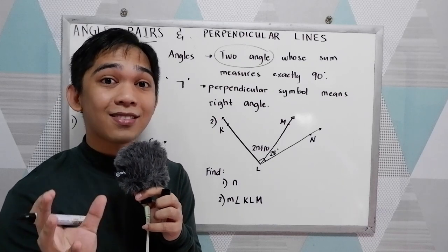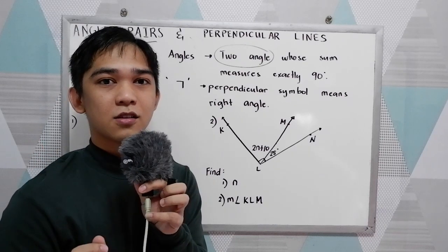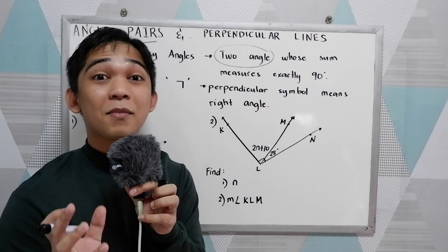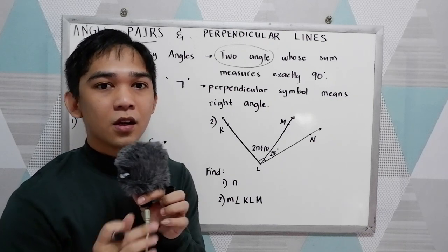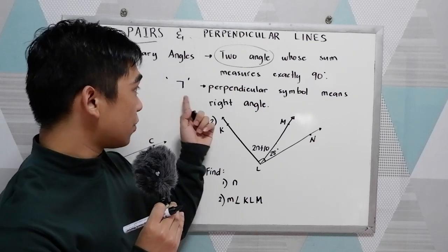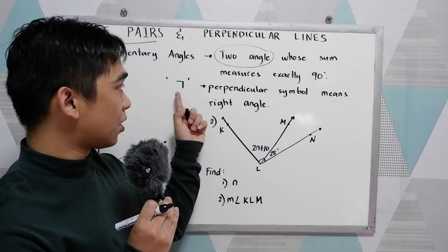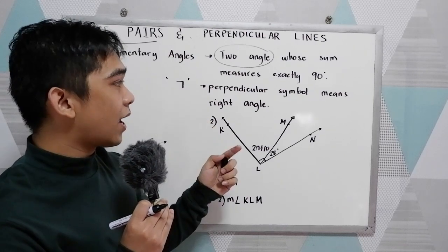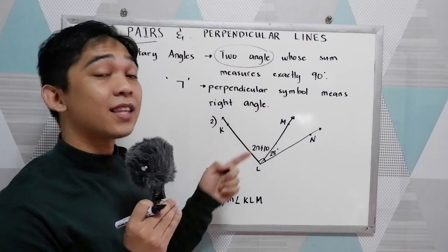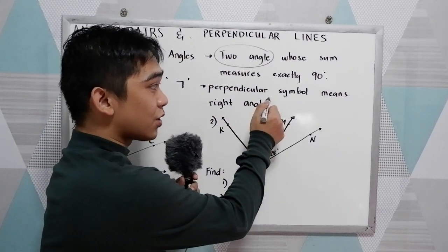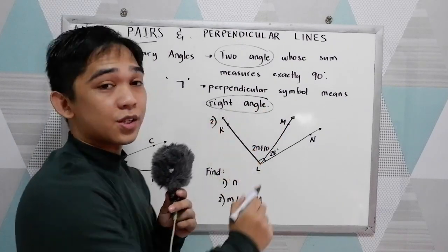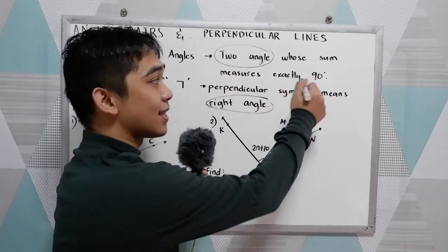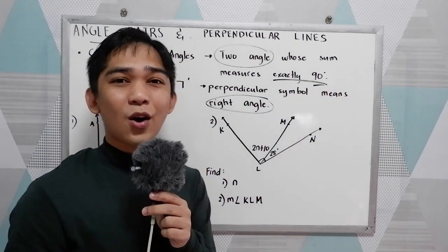If we are going to get the sum of the two angles, the sum must be 90. You will also encounter this symbol, the perpendicular line symbol, and that symbol means right angle. We know that a right angle measures exactly 90 degrees.